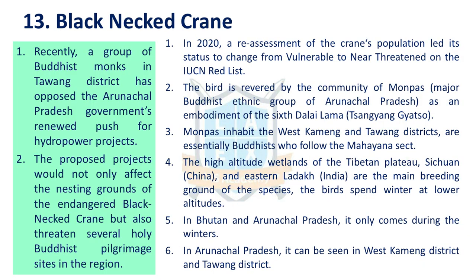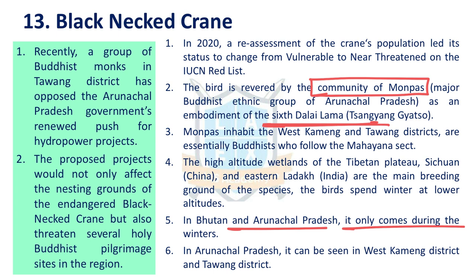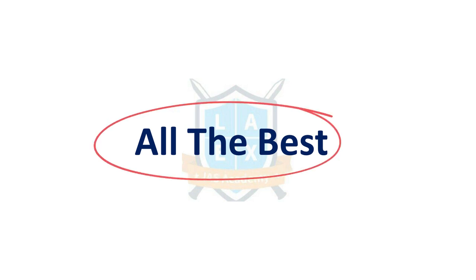Our last issue is the Black-Necked Crane. A group of Buddhist monks protested against a hydroelectricity project in the Tawang area of Arunachal Pradesh, saying that if this dam is built, grasslands will be submerged, threatening the habitat of the black-necked crane. Black-necked cranes are considered auspicious species among local populations in Assam. This bird is in the vulnerable category and is revered by the Monpa community. In Bhutan and Arunachal Pradesh, it is revered as the sixth Dalai Lama. It comes only during winters and is generally found in the high-altitude wetlands of the Tibetan Plateau, Sichuan Plateau, and eastern Ladakh. Recently, Ladakh declared the black-necked crane as its state bird. These are the issues of February 2021.